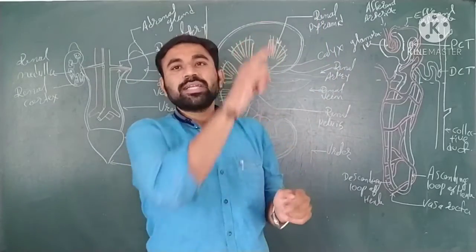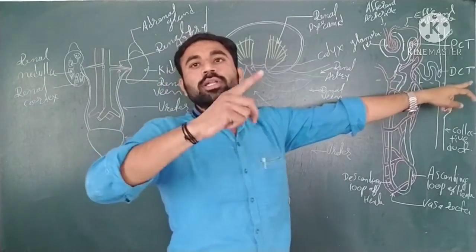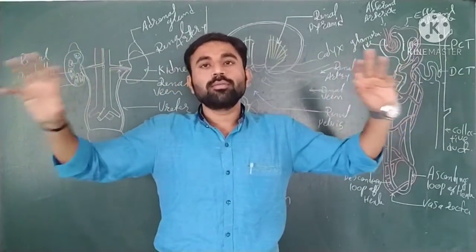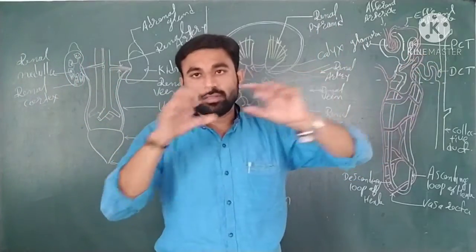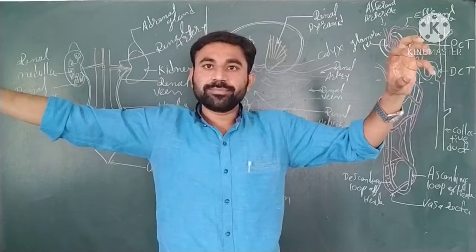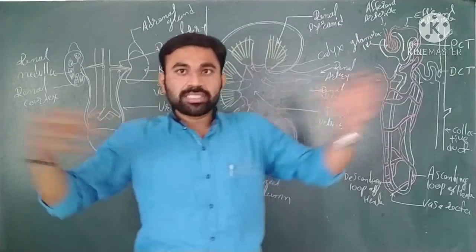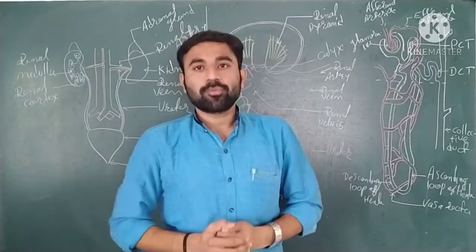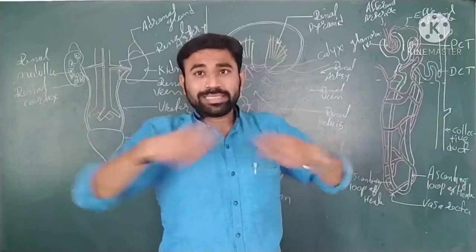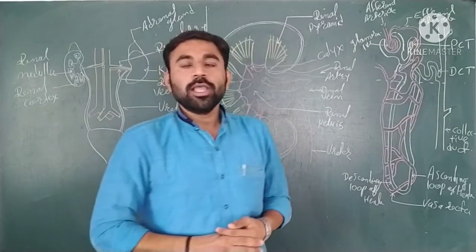After the ascending part of the loop of Henle, the tubule becomes more convoluted and forms a second convoluted tubule called the DCT — distal convoluted tubule. It is called distal because it is farther along the length of the tubule. The DCT then opens into the collecting tubules, also called collecting ducts.